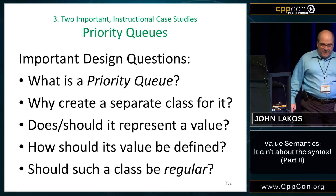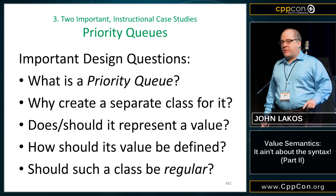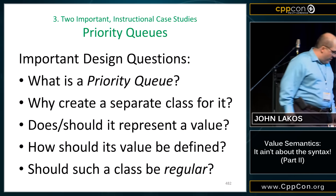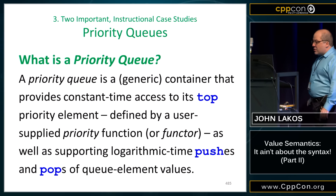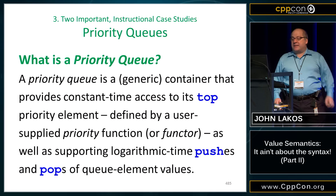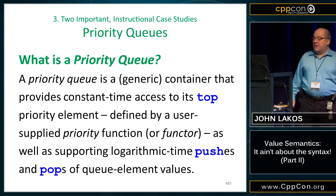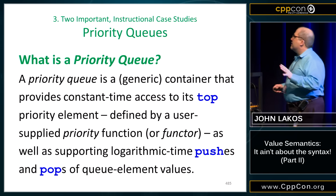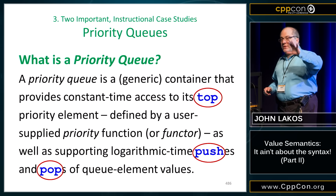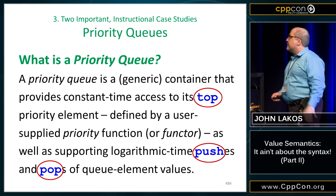Priority queues. I'm going to assume there are at least a couple of people in this room who could not, right now, implement a priority queue before the talk's over. So I'm going to do it for you. What's a priority queue? It's a generic container that provides constant-time access to its top priority element, defined by a user-supplied priority function or functor, as well as supporting logarithmic time pushes and pops of queue element values. These are the important operations we're going to model — this is the mathematical type right here.